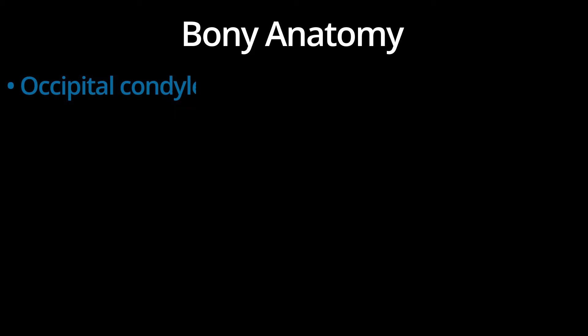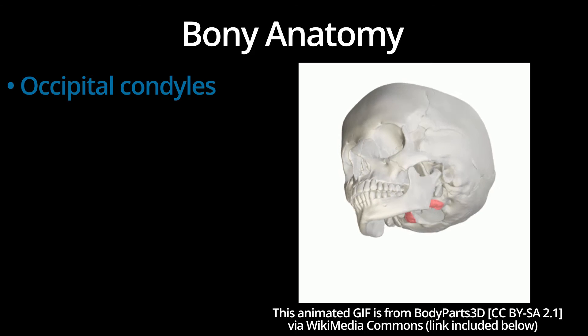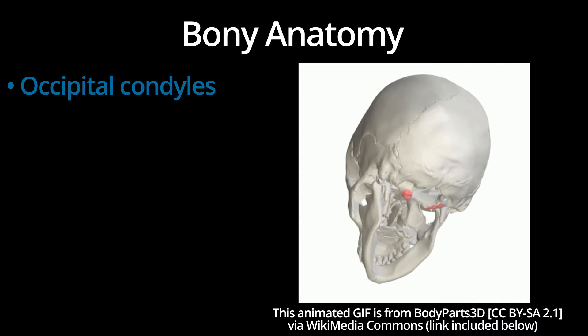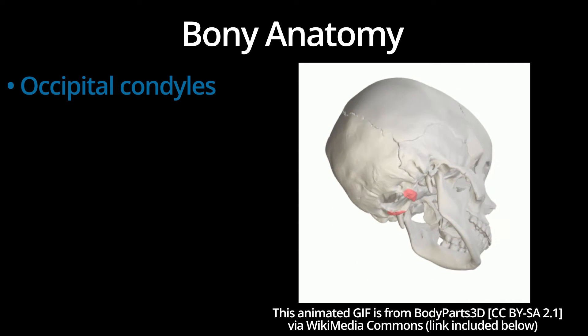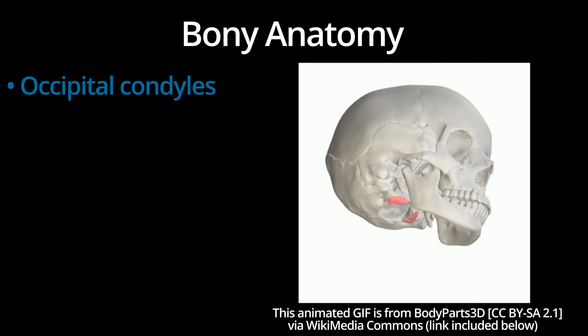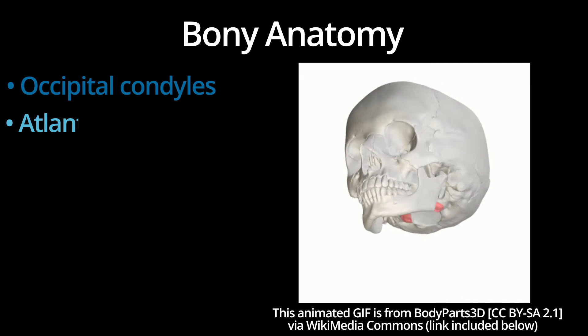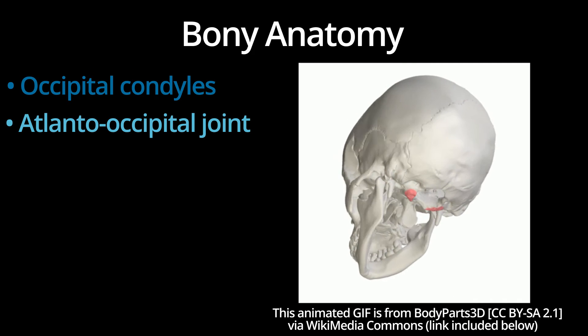Let's start off by going over some basic anatomy. The occipital condyles are paired protrusions that project off the occipital bone. The condyles articulate with the superior articular process of C1 to form the atlanto-occipital joint.